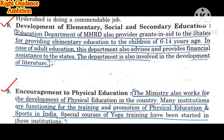The eighth point is the development of elementary, social, and secondary education. The MHRD provides grants-in-aid to states for providing elementary education to children of 6 to 14 years of age, ensuring the required facilities are available in schools. In case of adult education, this department also advises and provides financial assistance to states so that adults who cannot complete their education receive support from both the central and state governments.